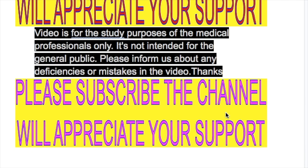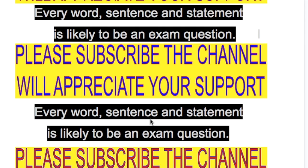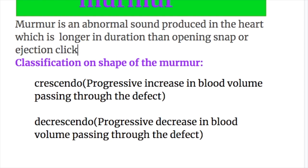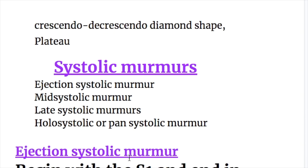In this video we will discuss systolic murmurs. A heart murmur is an abnormal sound produced in the heart which is longer in duration than the opening snap, ejection click, and mid systolic click. A murmur may be systolic or diastolic, or according to shape it may be crescendo, where there is progressive increase in blood volume passing through the defect; decrescendo, where there is progressive decrease; or a combined crescendo-decrescendo diamond shape murmur; or a plateau with the same intensity.